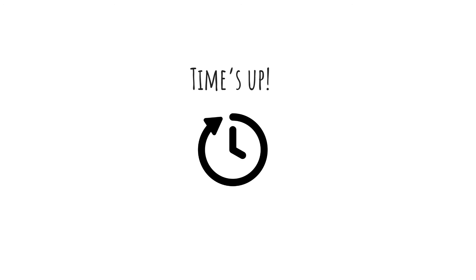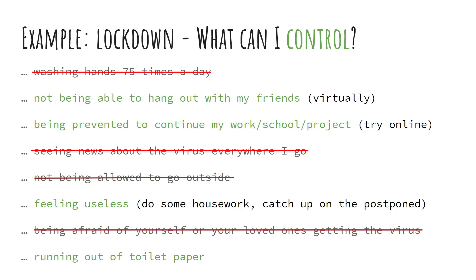If you need a couple more seconds to cross out those uncontrollables, feel free to do so. Going back to the lockdown example, this is what I crossed out. I can't control the washing hands protocol because there's a deadly virus spreading out there. It's true I'm not able to hang out with friends in person, but thanks to technology I can do that virtually. Similarly, I can find a way to continue my project online — hence these video series. Transferring your work online might be a challenge for some, like a hairdresser, and not at all for others, like a computer programmer. In most cases, you can find a way to be creative with virtual tools. I also can't control seeing the news about the virus, and I can't control governmental decisions on restrictions.